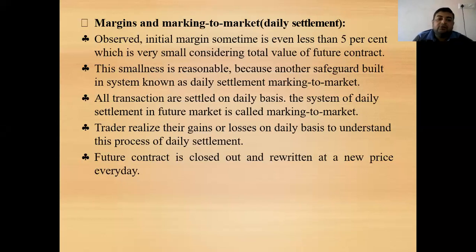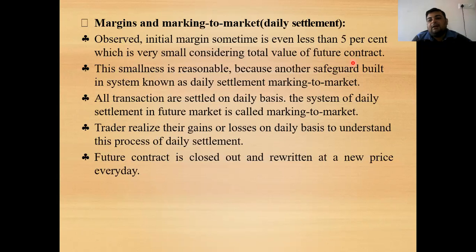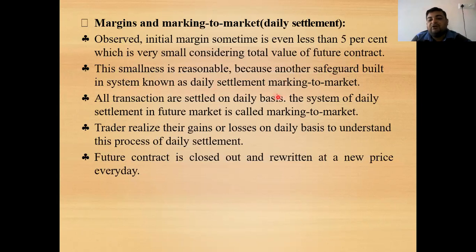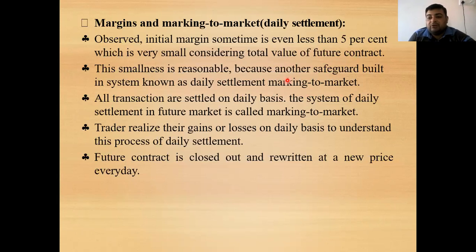The initial margin is sometimes 5% or less, which is a very small amount relative to the value of the futures contract. For example, for a ₹10 lakh contract, only ₹50,000 is the margin. This small margin is reasonable because another safeguard is built into the system — the daily settlement or marking to market. Losses are deducted from and profits are added to the margin account daily, meaning losses are settled on a day-to-day basis rather than accumulated to the contract's expiry.